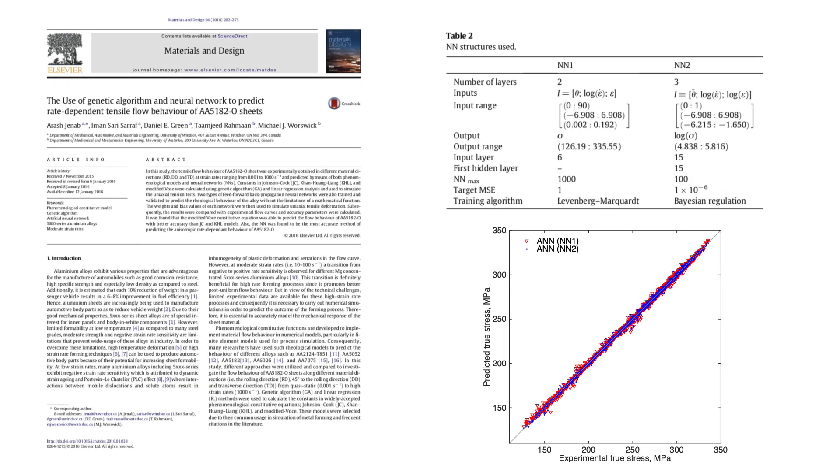In the second paper that I published, somehow based on neural network, we tried to use neural network to predict rate-dependent tensile flow behavior of 5182 aluminium alloys. I used two different structures for neural network, one of them had two layers, the other one had three layers.